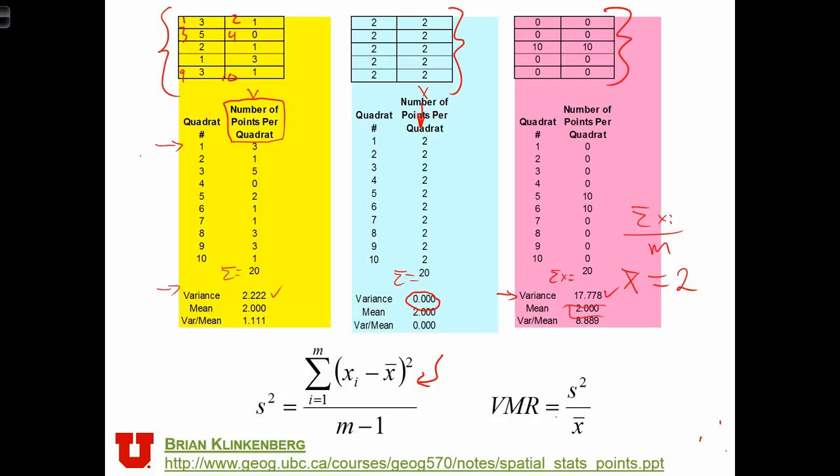Finally, we're going to calculate the variance to mean ratio for each of these cases, which is just variance over x bar. So in order to calculate it, say, in this case, we have 2.2 over 2, and that 2 repeats, so that equals 1.1. And here we did 17.778 over 2, which is 8.889. And here we did 0 over 2. Variance over mean equals 0.